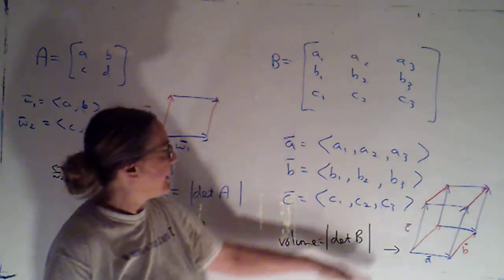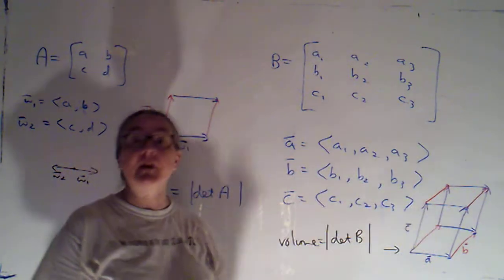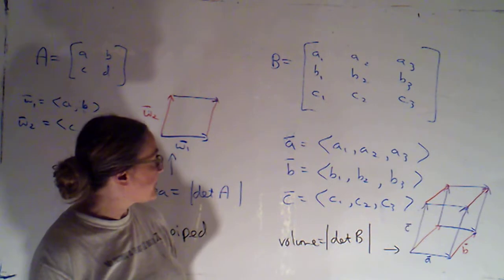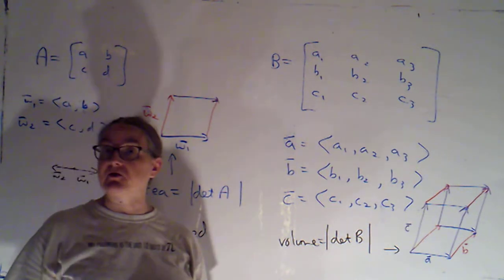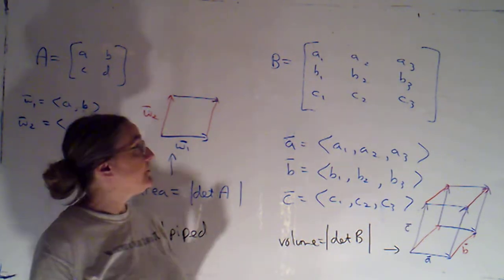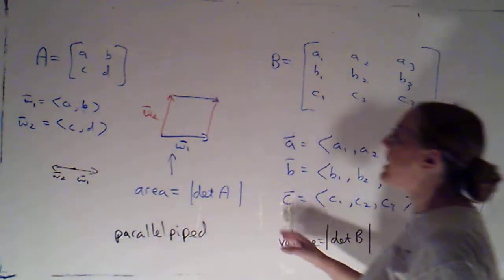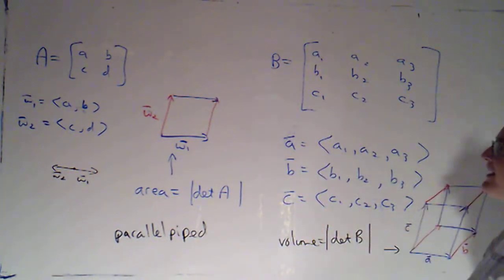Same thing works here. If I end up with a degenerate parallelepiped so that I don't have any volume because all three vectors lie in the same plane, well, then the determinant would be zero. Again, we'll eventually be able to prove that. Not ready to do that yet.